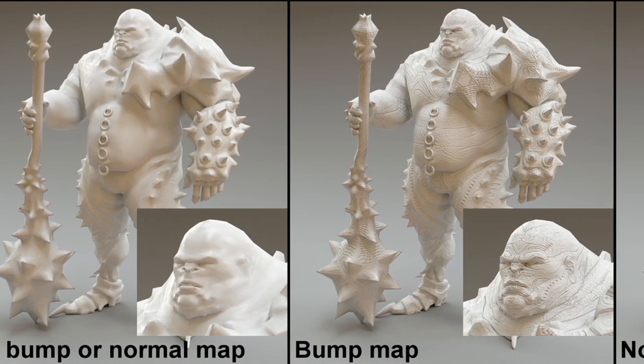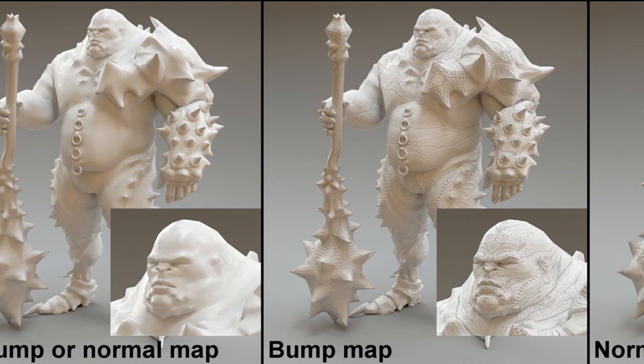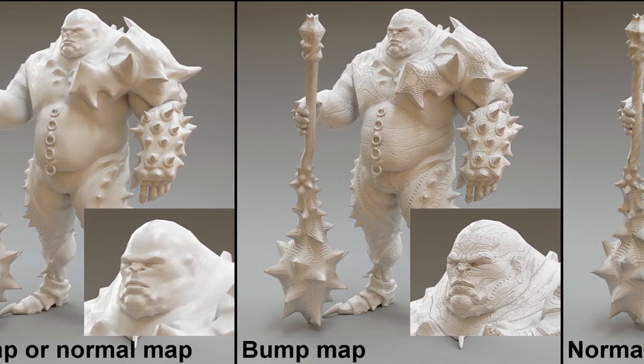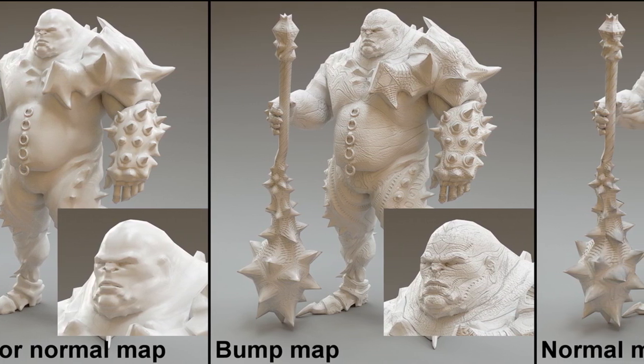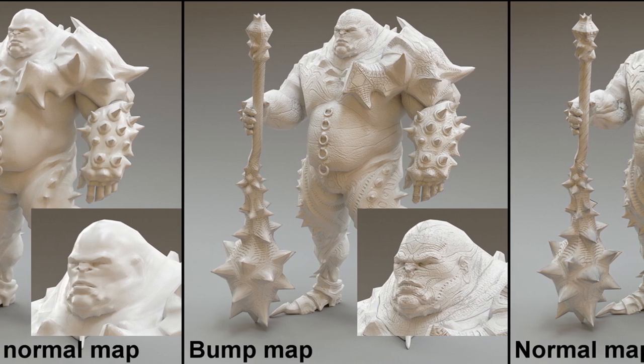Most basic shaders allow the use of bumps or normal maps. These are used to create the illusion of surface detail or texture. A good example of this would be the skin of an orange.